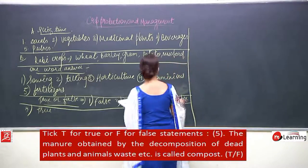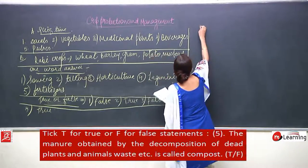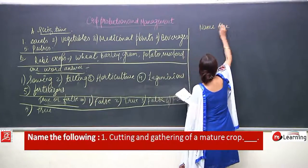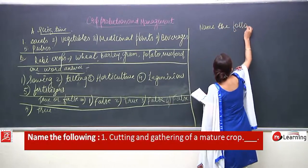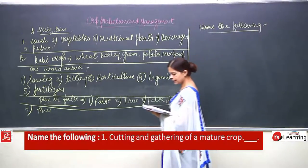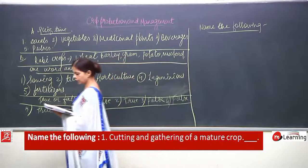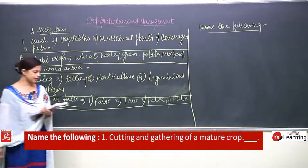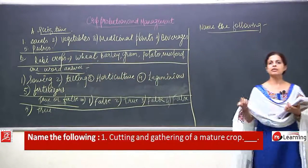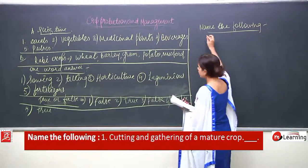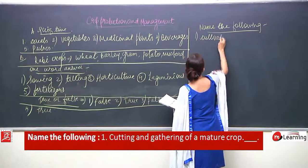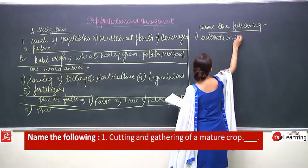Now the next section — name the following. Number 1: cutting and gathering of a mature crop — cutting means what? It is cultivation.